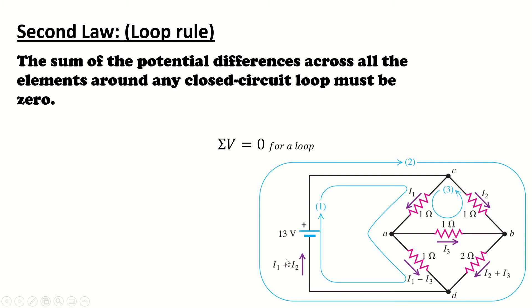The second loop rule, or loop rule, it says that the summation of the potential differences across all the elements around any closed circuit loop must be 0.